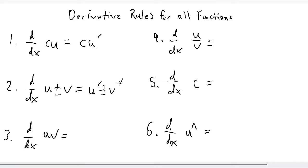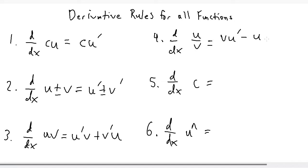The derivative of u multiplied by v is the product rule, where you do u prime v plus v prime u. The derivative of u divided by v is where you have to use the quotient rule, and the formula for that is v u prime minus u v prime, all over v squared.